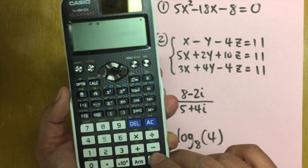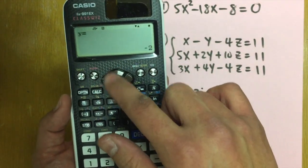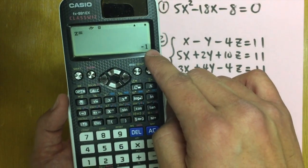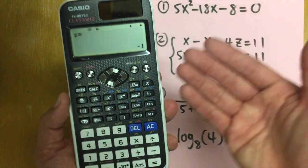And let me just press equal x is equal to five. Go down. Y is equal to negative two. Z is equal to negative one. How convenient is this?